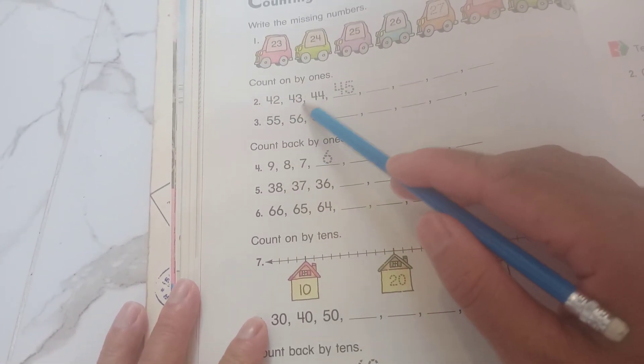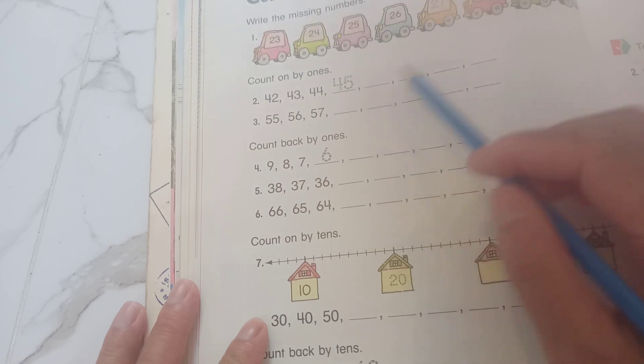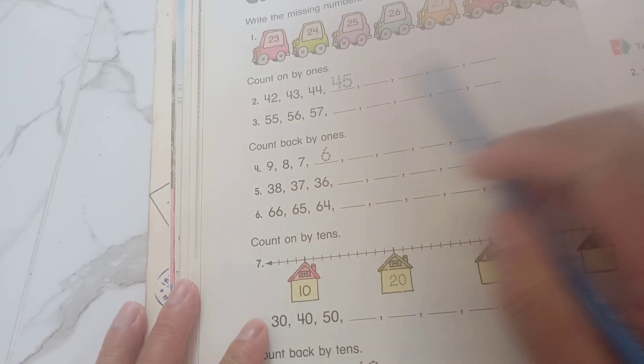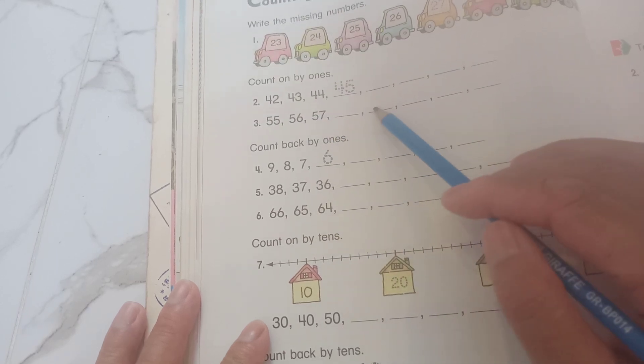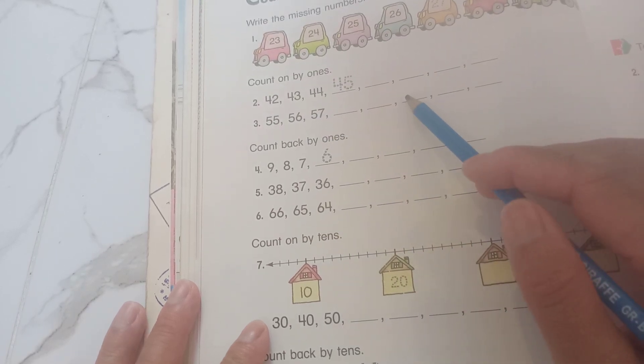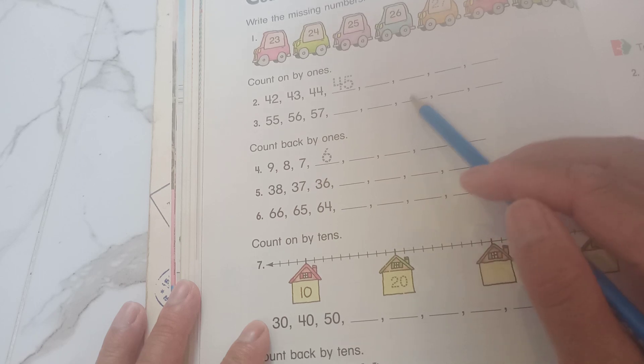And so now count one by ones. Number 2: 42, 43, 44, 45, 46, 47, 48, 49. And number 3: 55, 56, 57, 58, 59, 60, 61, 62.